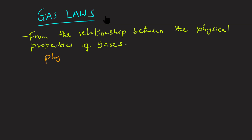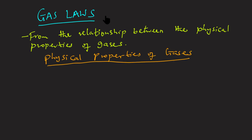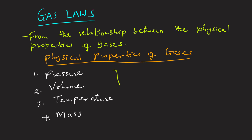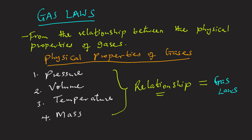Gases have various physical properties which we can observe with our senses. These physical properties include gas pressure, volume, temperature, and mass. Observations from careful scientific experiments have determined that these physical properties are related to one another, and the values of these properties determine the state of the gas. The relationships between these physical properties of gases gives rise to the gas laws.